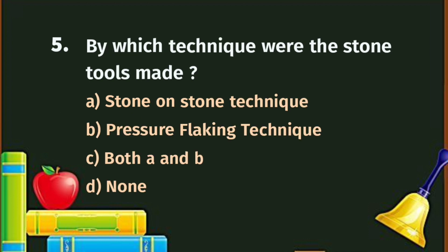Question number 5. By which technique were the stone tools made? A. Stone on stone technique, B. Pressure flaking technique, C. Both A and B, D. None. The correct answer is C - both A and B.